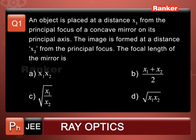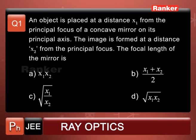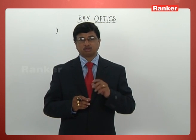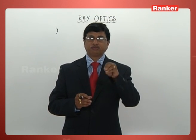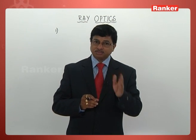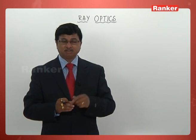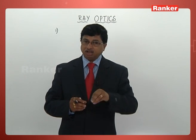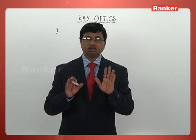The options given are: (A) x₁x₂, (B) (x₁ + x₂)/2, (C) √(x₁/x₂), and (D) √(x₁ · x₂). This is Newton's formula: when the distances to the object and image are measured from the principal focus of a concave mirror as x₁ and x₂, the focal length f = √(x₁x₂). The answer is option D.